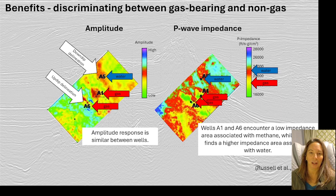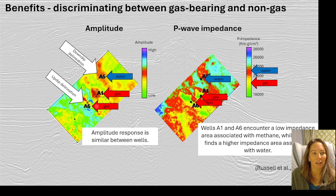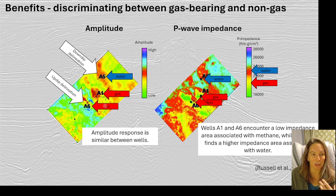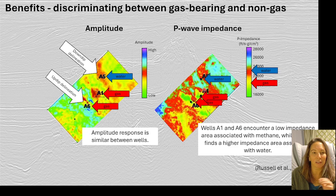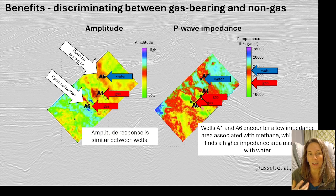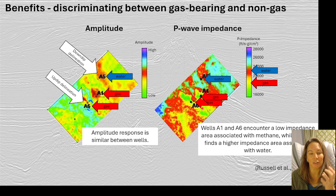Here's a more real-world example that demonstrates the power of inversion. Looking at amplitude data alone on the left, all three wells have very similar amplitude responses — yet we have two gas wells and one water well. We really want a seismic product that can differentiate between wet wells and gas-bearing wells. When we do the acoustic impedance inversion on the right, we notice the water well has a much higher acoustic impedance than the gas wells — more yellow in color versus the blue and red of the gas wells. This is a great demonstration of how combining seismic data and well logs can better discriminate wet reservoirs from hydrocarbon-bearing reservoirs.